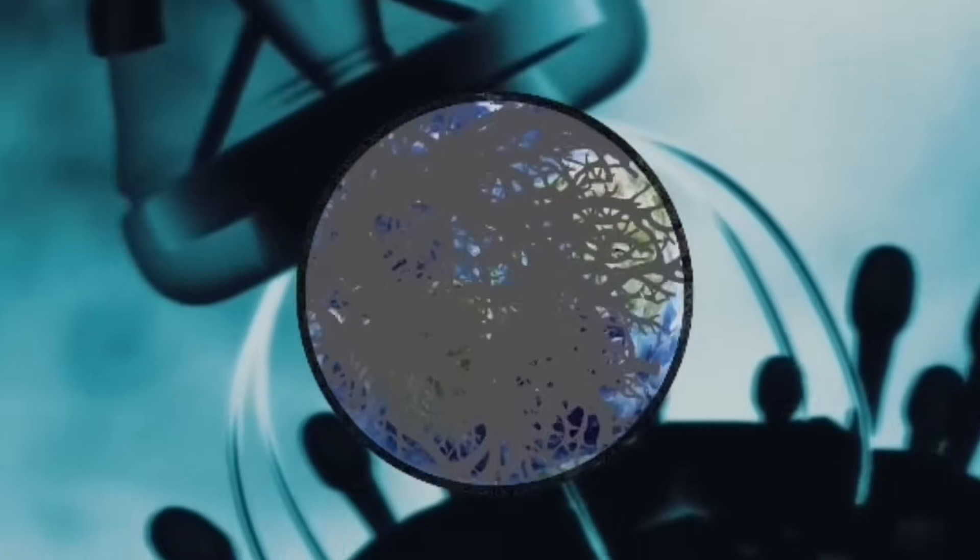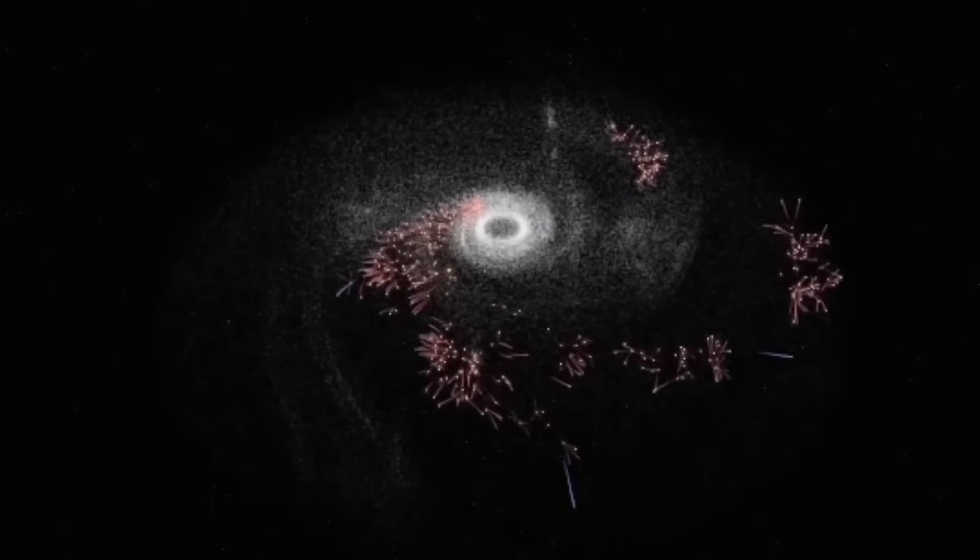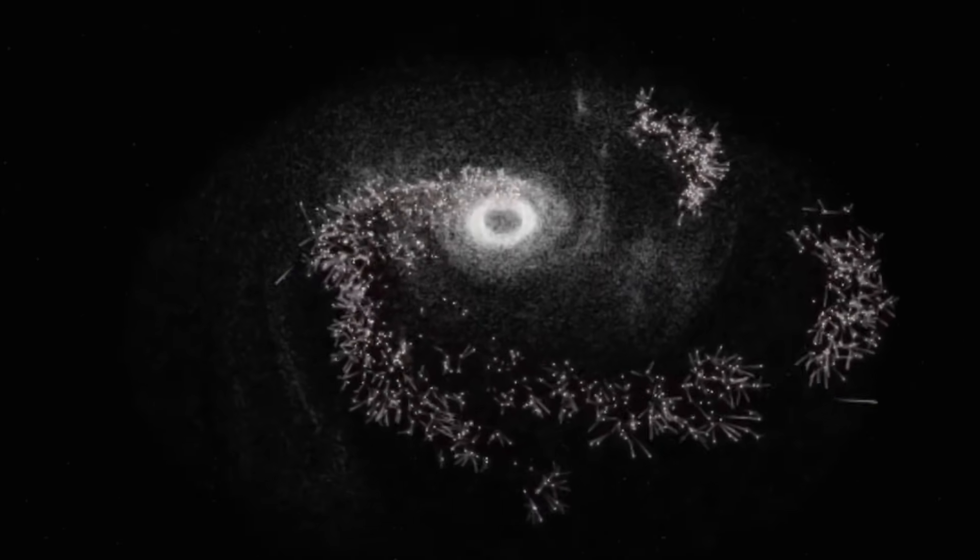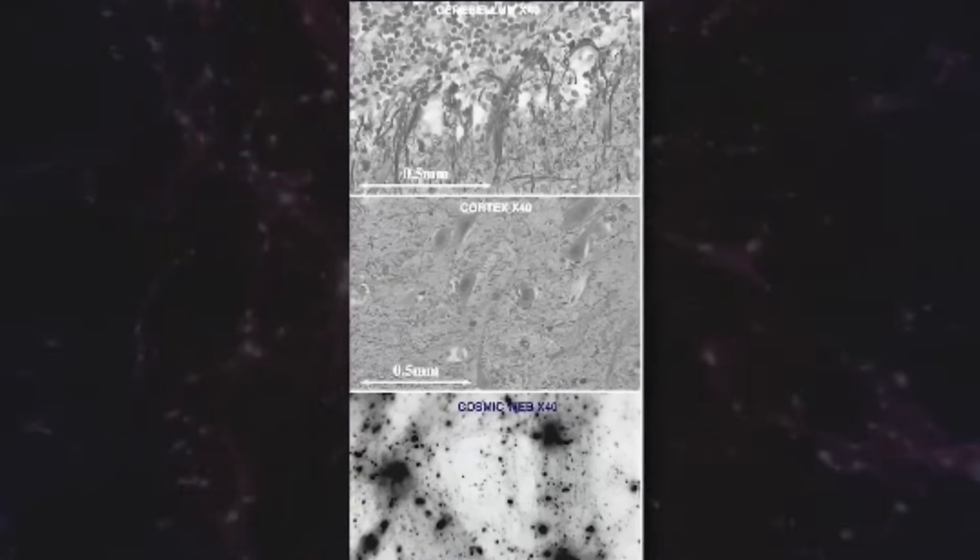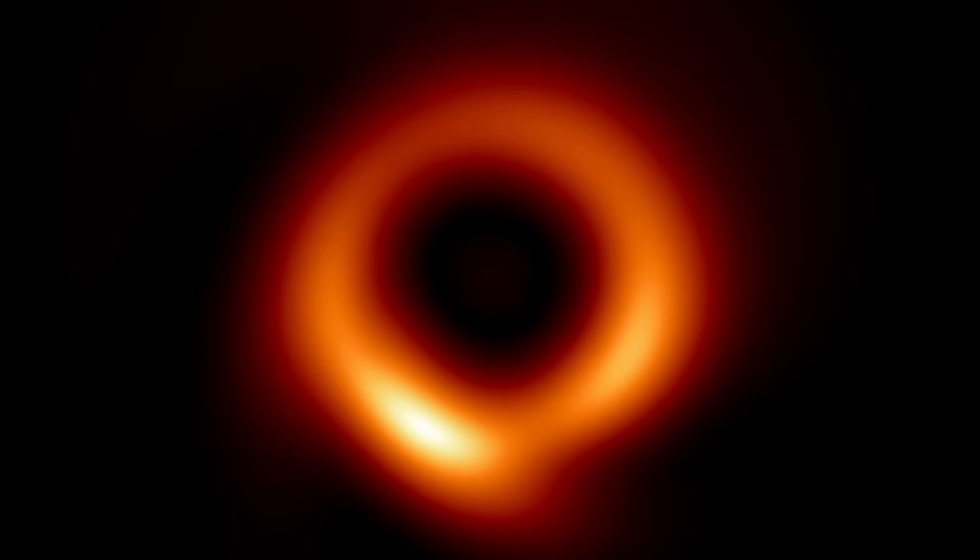Each concentric ring might represent a phase in the black hole's entanglement process. This supports the idea that the event horizon is more than a boundary. It's a quantum surface encoding the entire interior. But the most haunting detail isn't the image's structure. It's what lies at the center, a pattern that shouldn't exist.